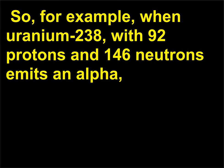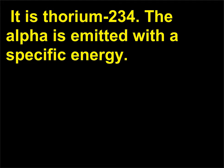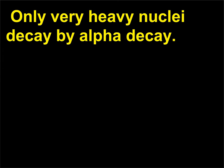So, for example, when uranium-238 with 92 protons and 146 neutrons emits an alpha, the daughter has 90 protons and 144 neutrons — it is thorium-234. The alpha is emitted with a specific energy. Only very heavy nuclei decay by alpha decay.